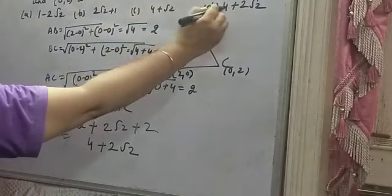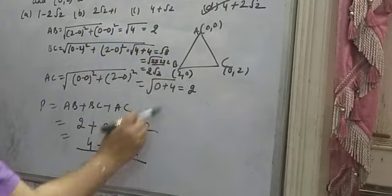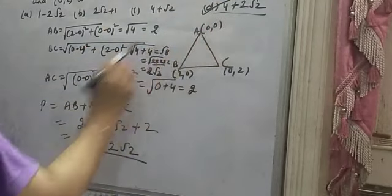So you have 4 plus 2 root 2. Option D is correct. Please see carefully which one matches. D is the answer. Thank you.